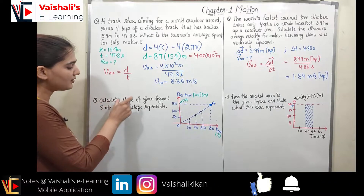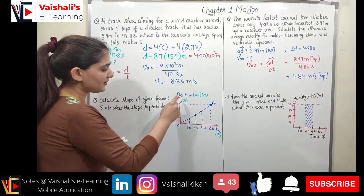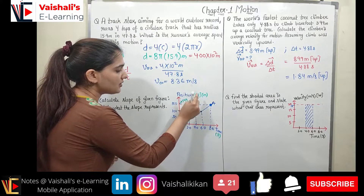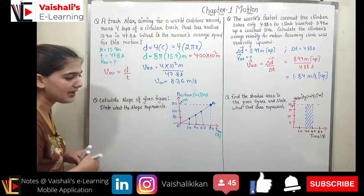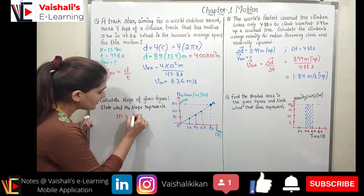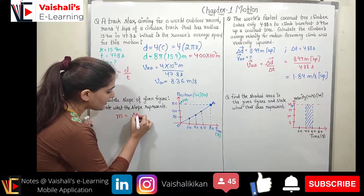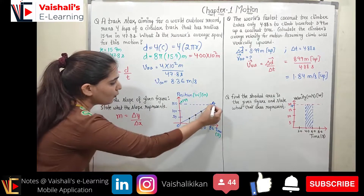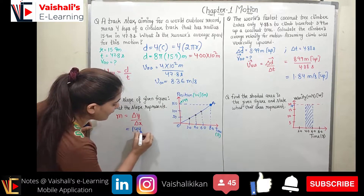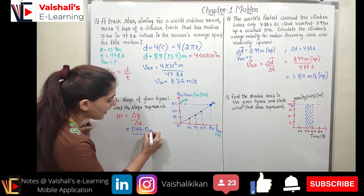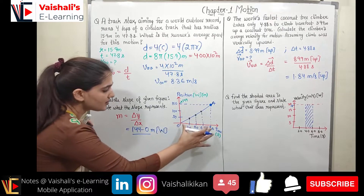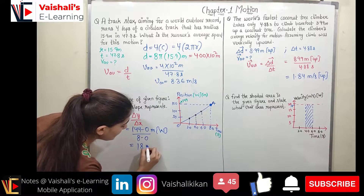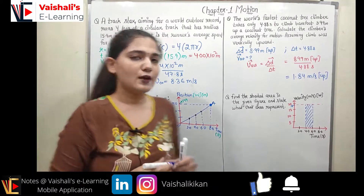Problem 3: Calculate the slope of a given position-time graph and state what it represents. Slope M = Δy / Δx. From point O to point A: change in position = 144 m west (from 0), change in time = 8 s (from 0). Slope = 144 / 8 = 18 m/s west. This slope represents average velocity.